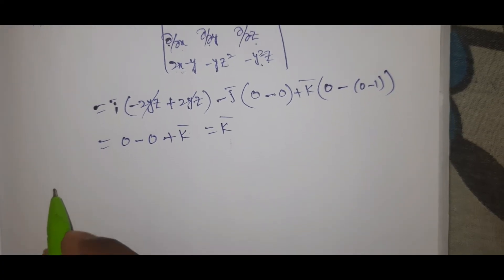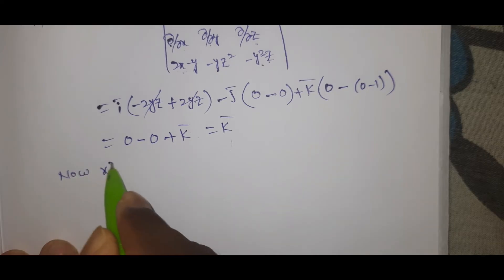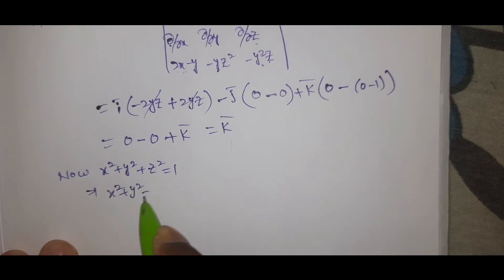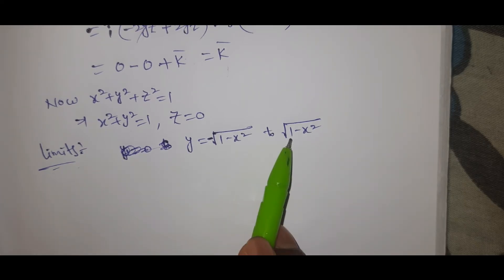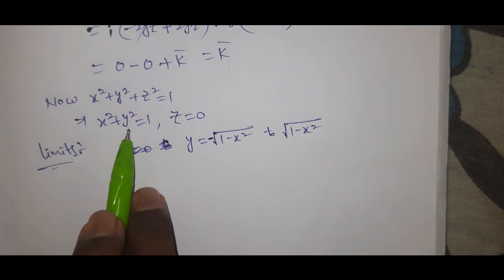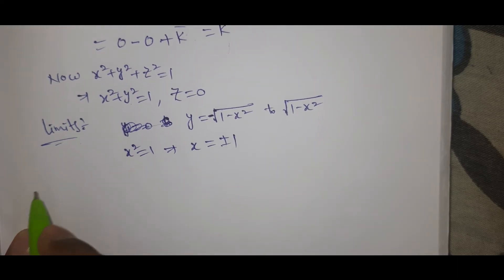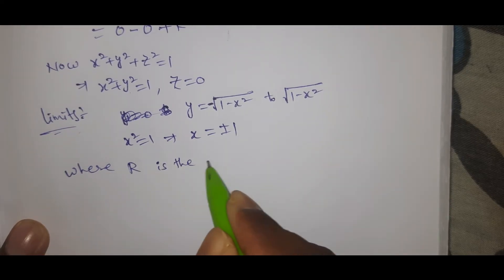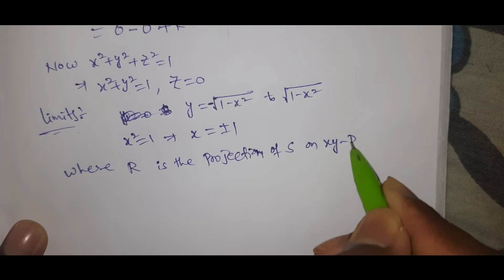Since curl F̄ = k̄, and the surface is the upper half of x² + y² + z² = 1, the projection (capital R) is on the xy plane. The circle is x² + y² = 1, z = 0. The limits for y go from -√(1-x²) to √(1-x²), and x goes from -1 to 1.